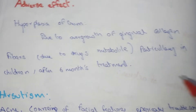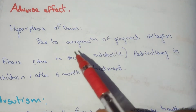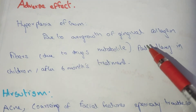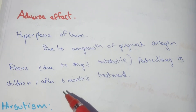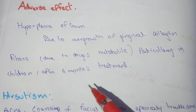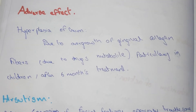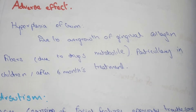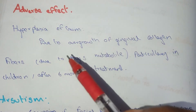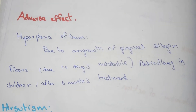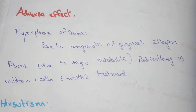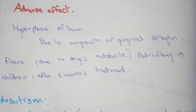The adverse effects of phenytoin sodium include hyperplasia of the gum, due to overgrowth of gingival collagen fiber. This is particularly seen in children after six months of treatment.